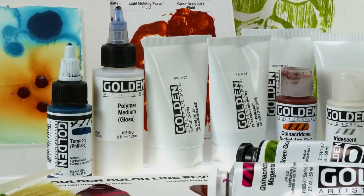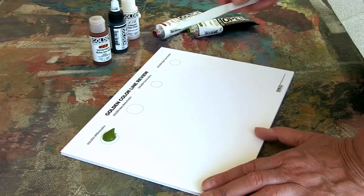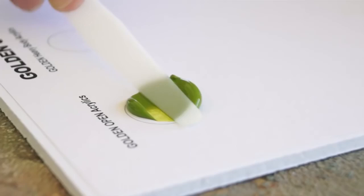Open acrylics are uniquely formulated slow drying acrylics that are slightly softer than heavy body acrylics. The slow drying time is ideal for shading, blending, and subtle transitions. Open acrylics are also great for printmaking.